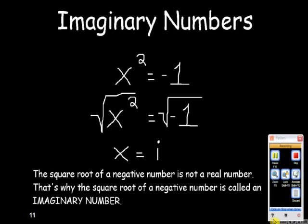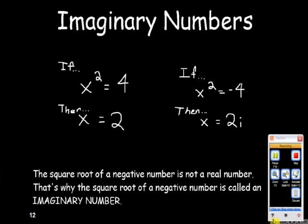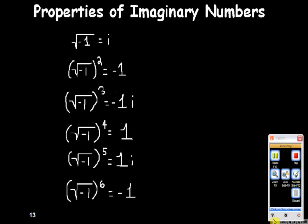So anytime you take the square root of a negative number, you're going to put an i by the answer and treat it as if it were a positive number. I means imaginary; you are imagining that there is such a thing as the square root of negative 1. If x squared is equal to 4, that means x is equal to 2. It could be plus or minus 2, actually. If x squared is equal to negative 4, then x is equal to 2i.